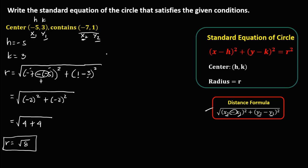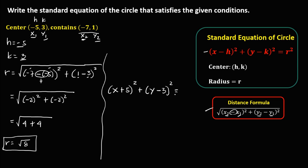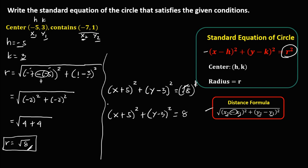To write the standard equation of the circle using this formula: since h is negative 5, this becomes x plus 5, to the power 2. Plus y — since k is positive 3, this becomes negative 3 — to the power 2. Equals r to the power 2, where the radius is square root of 8, to the power 2. Simplify: cancel the radical, so square root of 8 squared equals 8. So x plus 5 to the power 2, plus y minus 3 to the power 2, equals 8. This is now the standard equation of this circle.